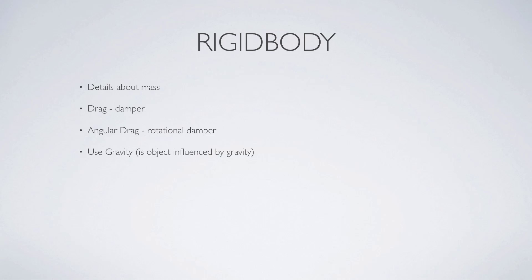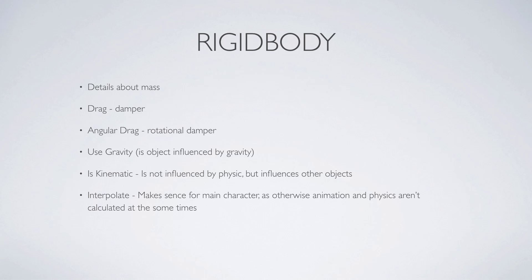Then we have the useGravity property which tells if our object is influenced by gravity or not. Then we have isKinematic which we can activate — our object is not influenced by physics but it still influences other objects. For example, this could be great for a wall. Then interpolate makes sense for characters, as otherwise animations and physics aren't calculated at the same time.